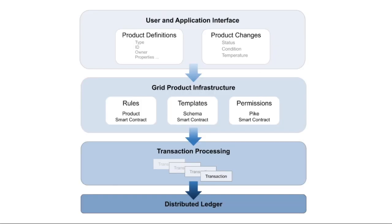There are three main components that make up the Grid Product infrastructure. Templates: any data that goes through Grid Product has to adhere to a defined template. Grid Product includes a default template that implements GS1 standards, but it's possible to define templates based on other standards to meet the needs of the parties involved.